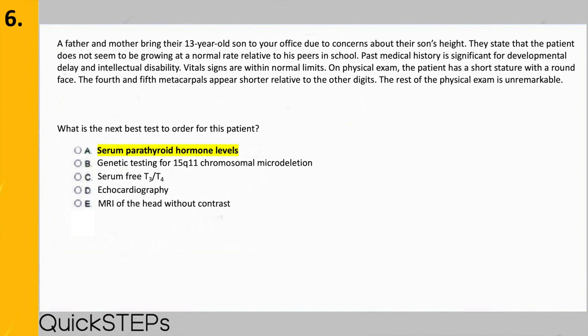The other choices are associated with different conditions. Choice B — 15q11 microdeletion syndrome — presents with many neurocognitive and developmental issues. Serum T3/T4 would be checked with higher suspicion for a thyroid condition. Echocardiography would be done if you suspect a genetic condition structurally affecting the heart, such as Turner syndrome presenting with coarctation of the aorta or bicuspid aortic valve. MRI of the head without contrast would look for masses, hydrocephalus, or ischemic damage.